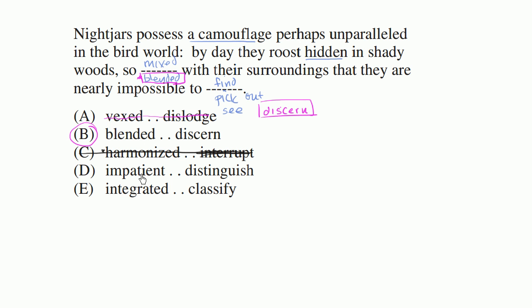So impatient with their surroundings. That already doesn't make sense. I don't even have to read the rest of it. So we could rule that out. Distinguish actually isn't a bad word for the second blank. That they are nearly impossible to distinguish. That kind of has the same type of meaning as discern or pick out or see relative to its background. But this impatient was weird for this first blank. That doesn't sound like how we would talk about a bird being impatient with its surroundings.